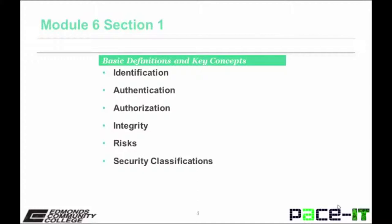An organization's internal security needs come from various principles and needs for access control. There are the following three. Identification, which is the verification of the identity of the person who claims to be that person.